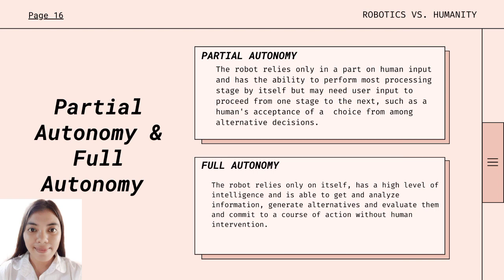Full autonomy means the robot relies only on itself, has a high level of intelligence, and is able to get and analyze information, generate alternatives and evaluate them, and commit to a course of action without human intervention. In short, full autonomy excludes active human-robot interaction. In other words, a robot with full autonomy can perform actions or activities even without a master telling it what should be done or what should be performed next.